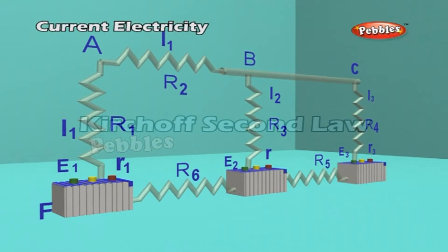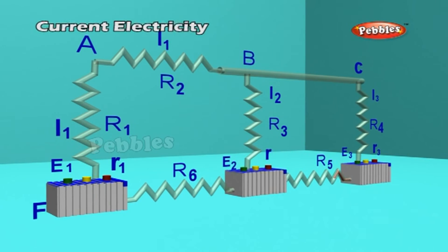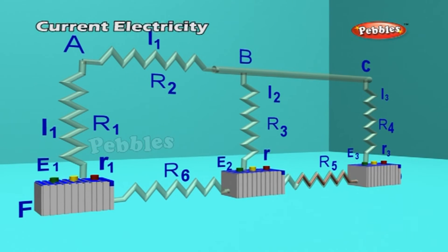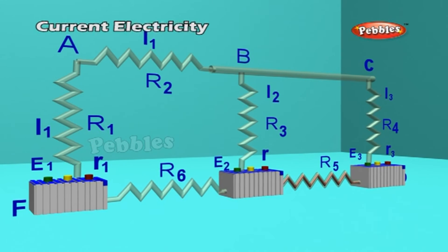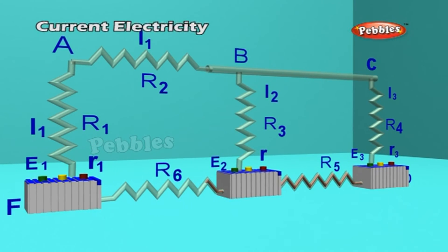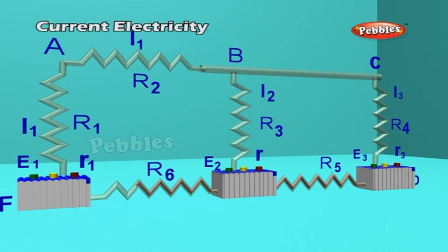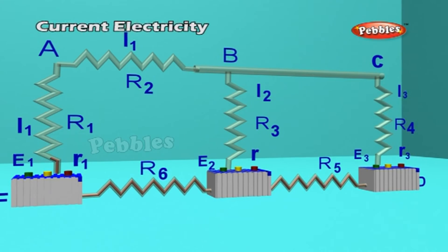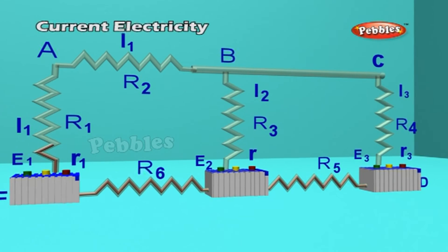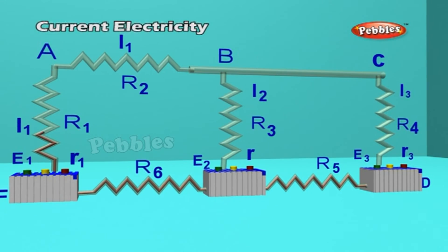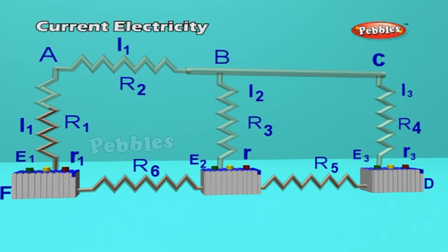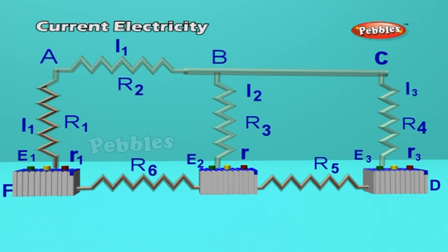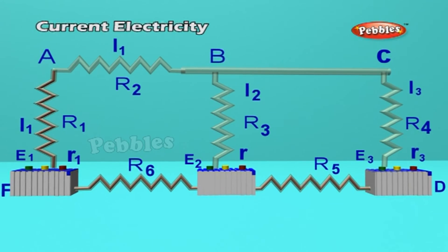Kirchhoff's Second Law states that the sum of the EMFs around a loop is equal to the sum of the potential drops around the loop. This law is a consequence of the law of conservation of energy. It may also be stated as: in any closed circuit, the algebraic sum of all the potential differences is zero.